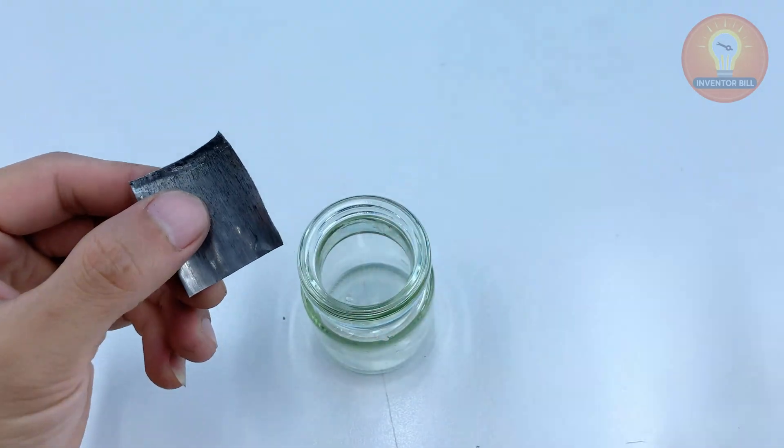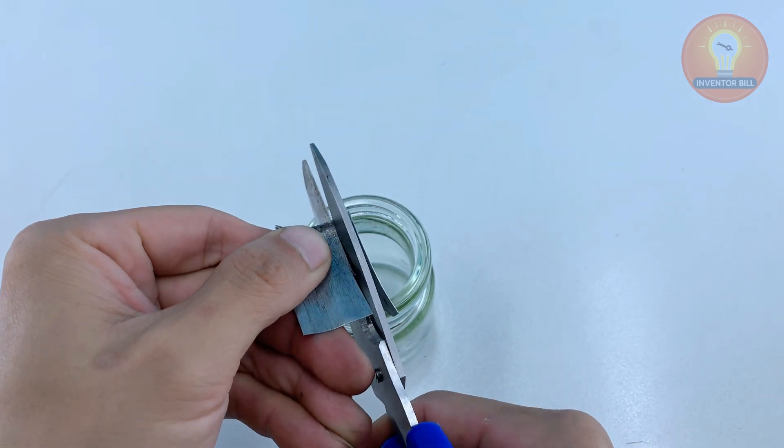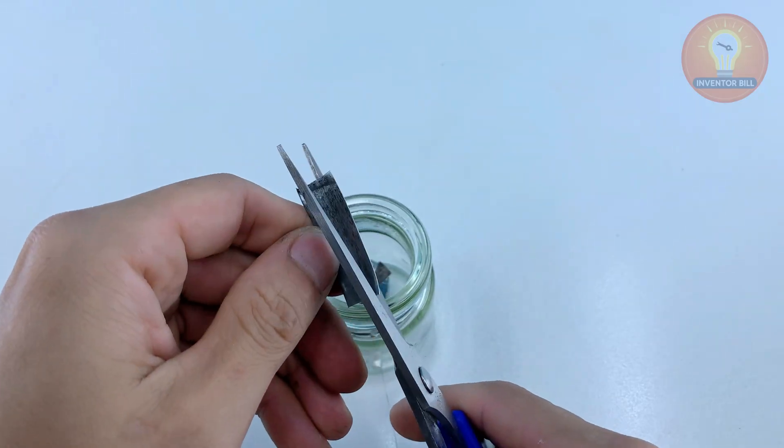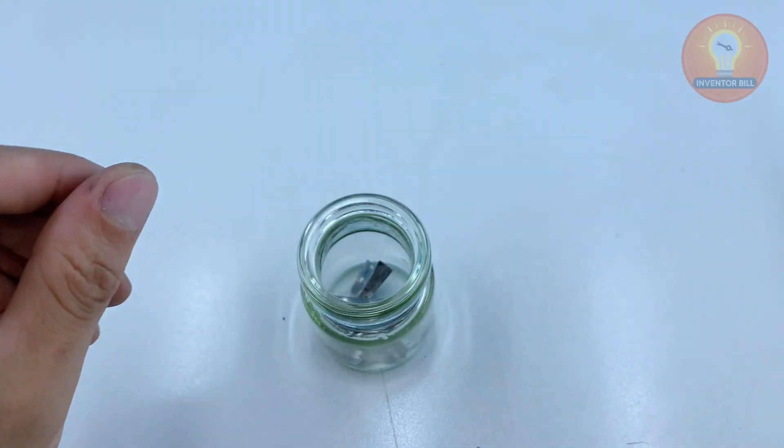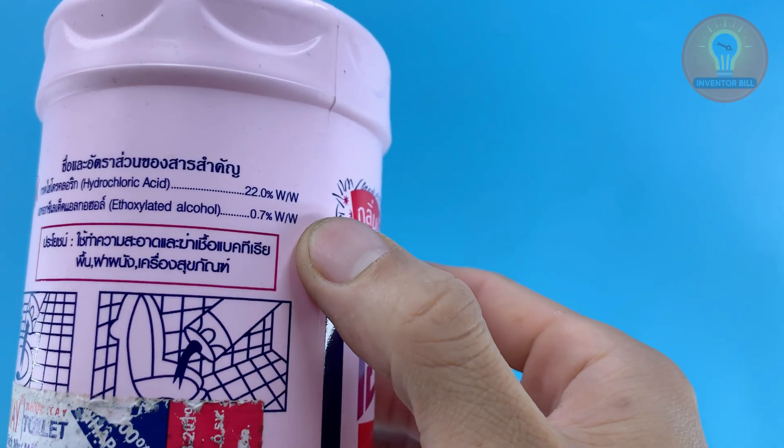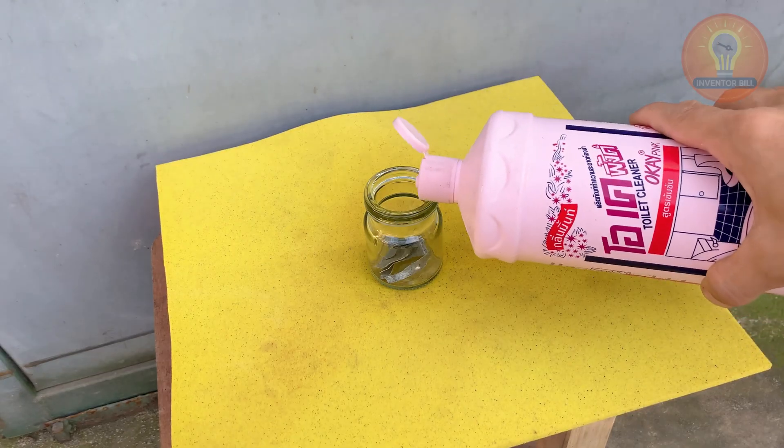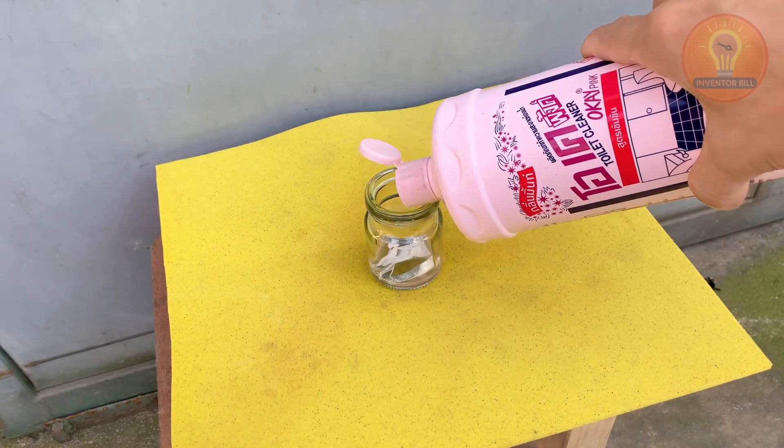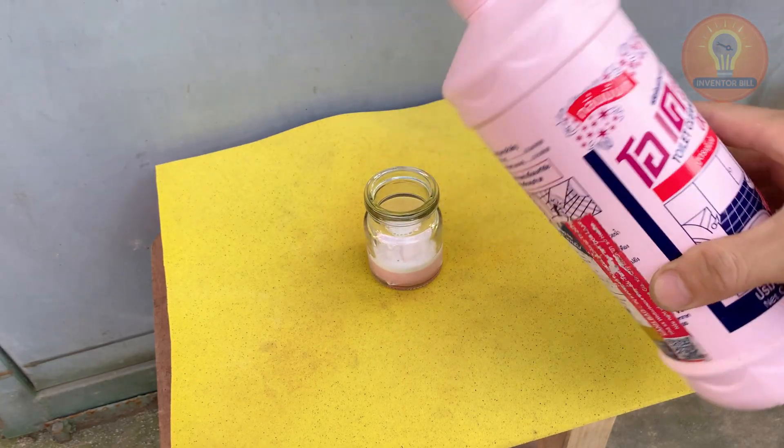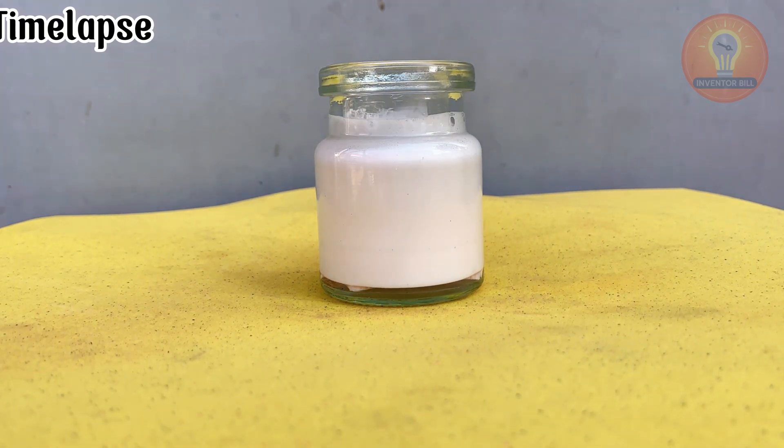To get the soldering spoon ready, you need a simple acid mix that helps the metal bond. Take the small metal scraps you cut earlier and drop them into a glass jar. Set the jar outside for good airflow, then pour hydrochloric acid over the pieces until they're fully covered. The acid will react with the metal and create a solution that cleans the joint and lets your solder stick better. Let it sit while you prepare the rest of the setup.